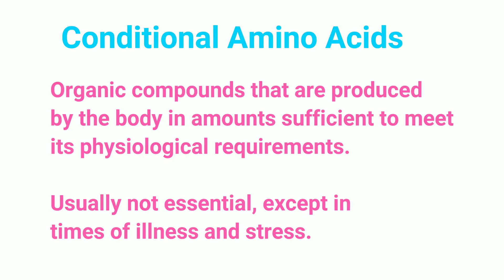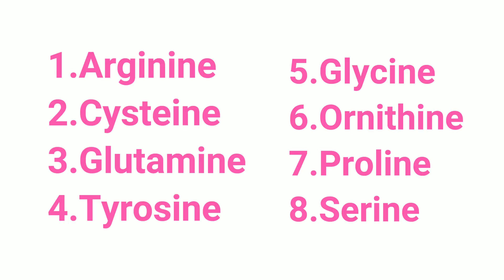Conditional amino acids are the organic compounds that are produced by the body in amounts sufficient to meet physiological requirements, but they can become essential at times in need, such as illness or stress. They include arginine, cysteine, glutamine, tyrosine, lysine, ornithine, proline, and serine.